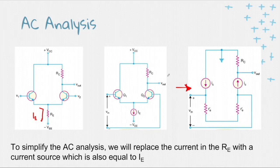we will short all the capacitors and short the DC voltages and open the DC current sources. With this, the VCC is connected to ground and the current source IE is open.